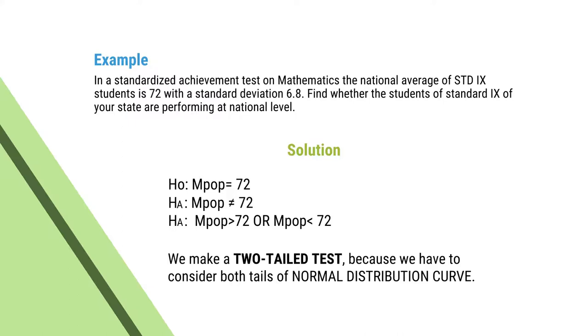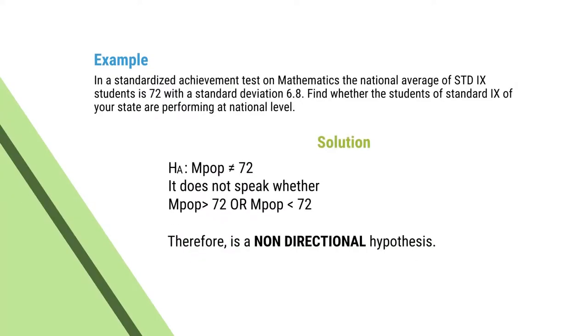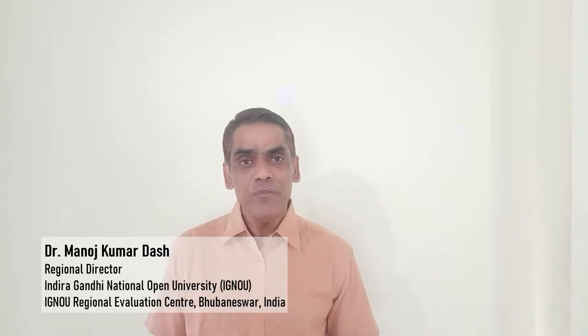We make a two-tailed test because we have to consider both tails of the normal probability curve. The alternate hypothesis states that the mean of the population is not equal to 72. It does not specify whether the mean is greater than 72 or less than 72. Therefore, it is a non-directional hypothesis. The alternate hypothesis here is a non-directional hypothesis. Both the type of test and the level of significance are very important and must be examined together.